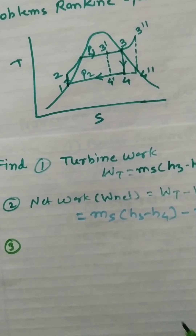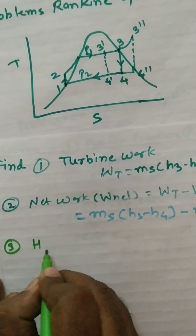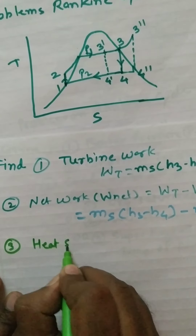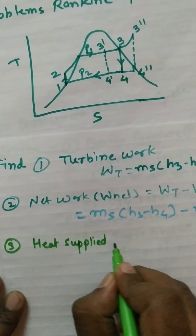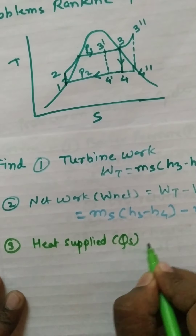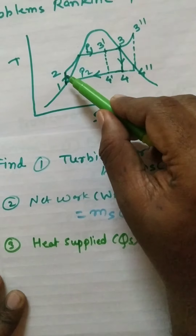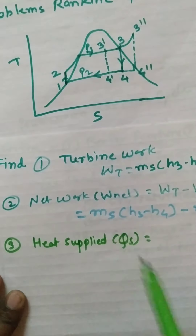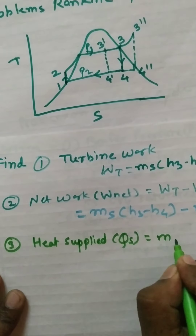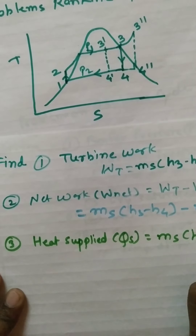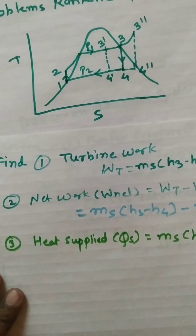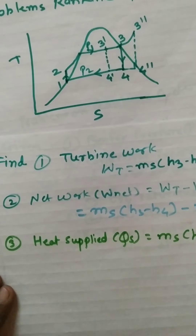The third parameter is heat supplied. Heat is supplied in the boiler, where process 2 to 3 occurs. So heat supplied Qs = ms × (H3 - H2).